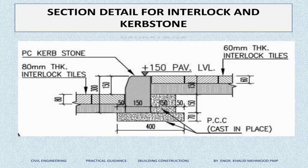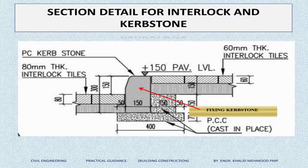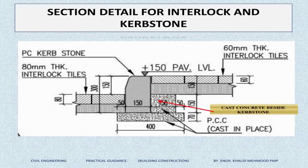I will explain all the steps from the arrow marks. Step one, indicated by the red arrow, is the base for the PCC of the curbstone. After the base is ready, step two is the PCC casting under the curbstone. The next day after casting PCC, step three is the curbstone fixation with cement sand mortar.